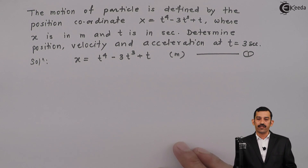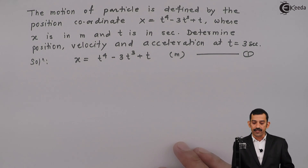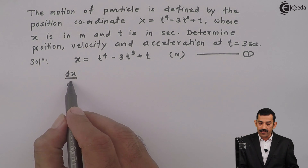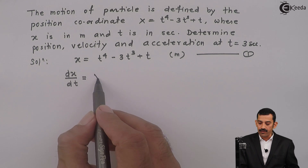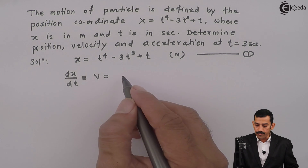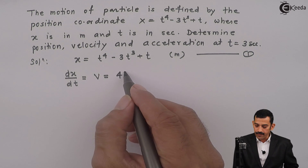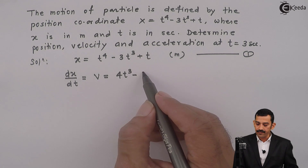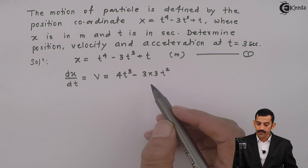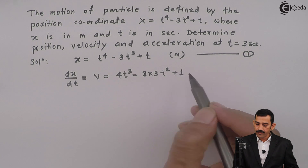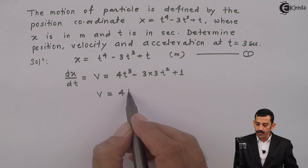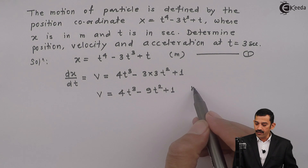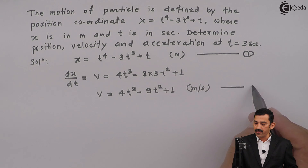From equation of x, we will easily get the equation of velocity if we differentiate x with respect to time t. That means dx/dt, which represents velocity. Differentiating: t⁴ gives 4t³, then 3t³ gives 9t², and differentiation of t is 1. So the equation of velocity is 4t³ minus 9t² plus 1, in meters per second. This is equation number 2.